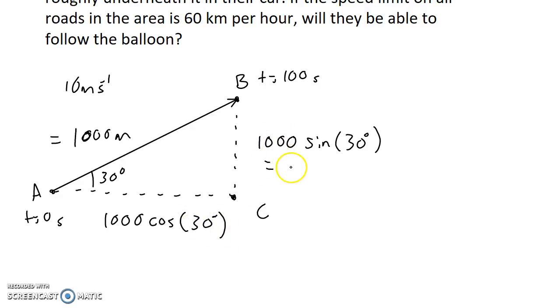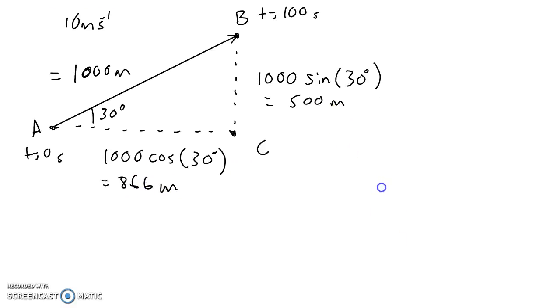Using your calculator, you'll find that this vertical distance is 500 meters and this horizontal distance is 866 meters. Which means that for the scientists, the total distance that they have to travel is 1,366 meters, the sum of 500 and 866.